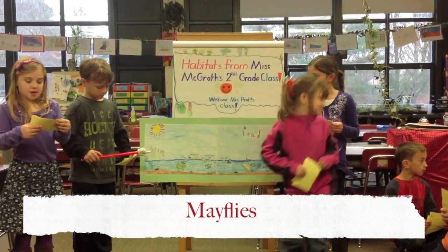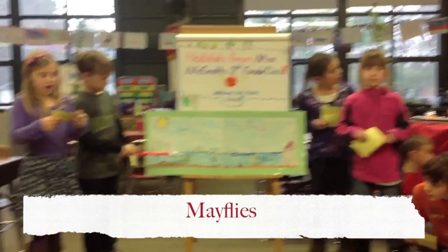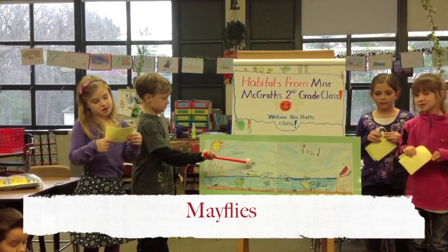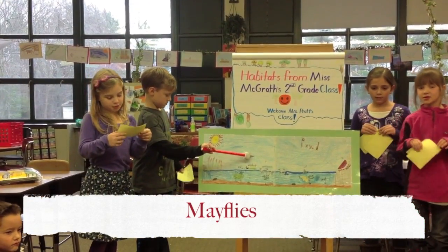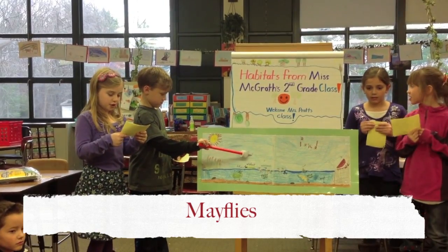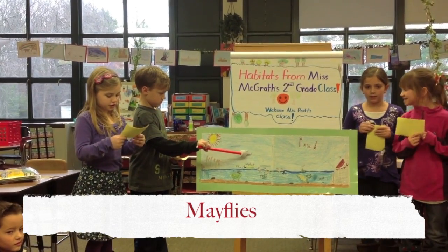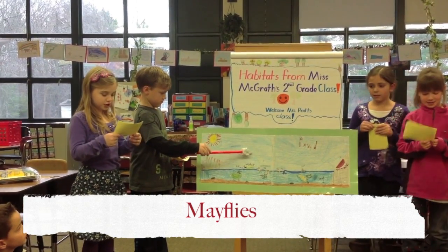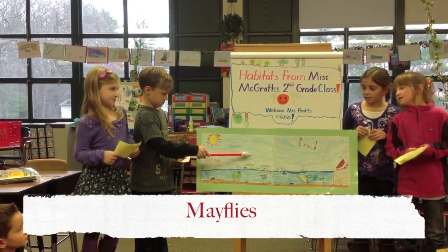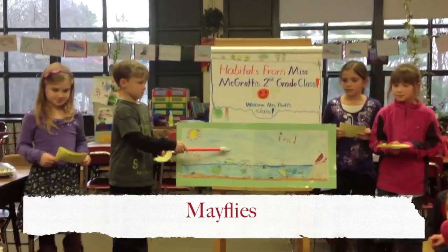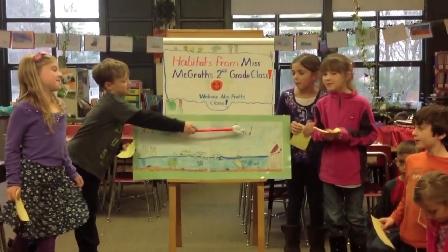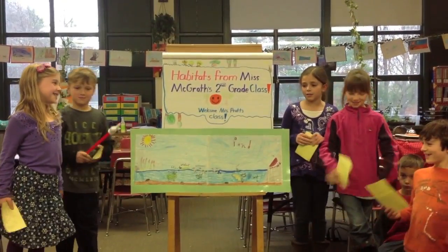Mayflies. Mayflies eat algae and dead materials. Mayflies' predators are fish, birds, frogs, toads, salmon, spiders, and turtles. And that's the pond.